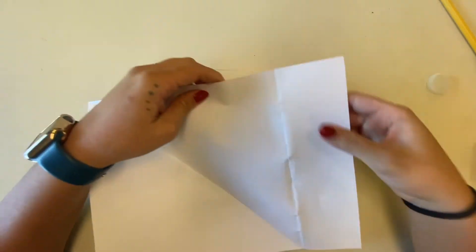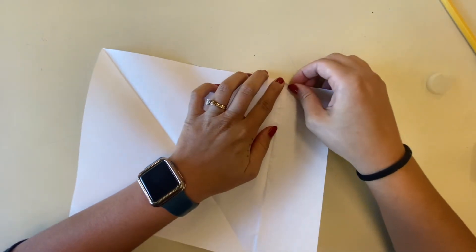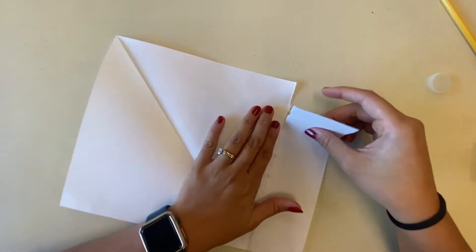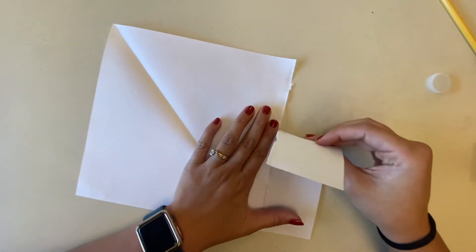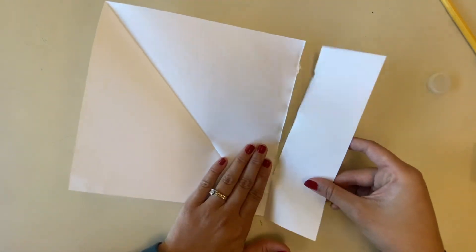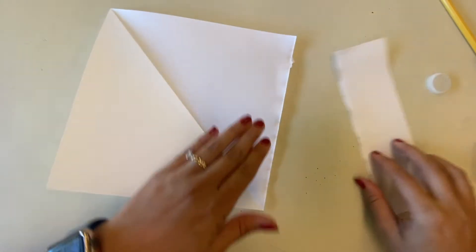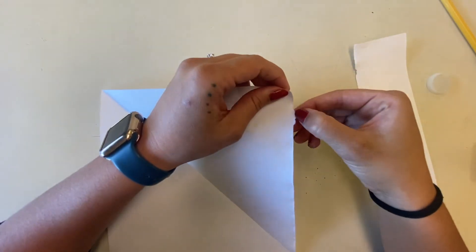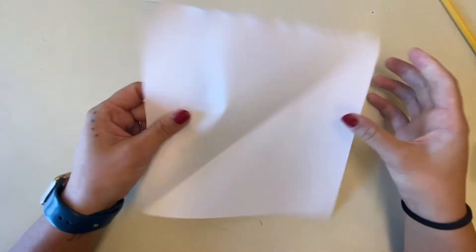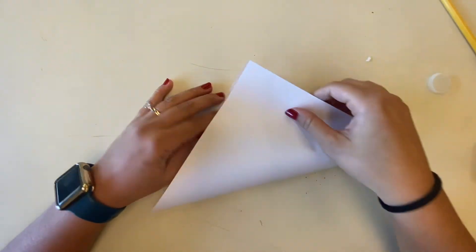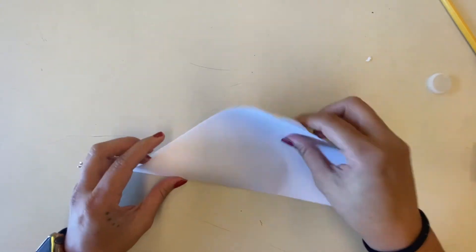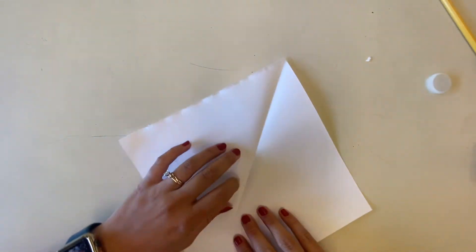Once you've creased it a whole bunch, you can go ahead and start tearing it. Since we've made such a deep crease, it should tear pretty easily and pretty straight. You might have little pieces here and there that stick on, or maybe you'll accidentally tear your paper. It's not a big deal. You could always just grab some tape and patch the tear up or grab a new piece of paper. Since we now have square paper, we're ready for the next step, which is more folding.